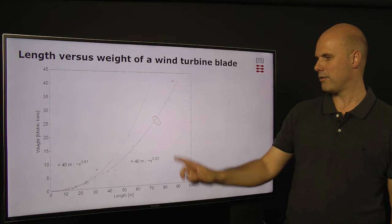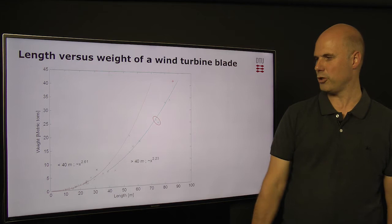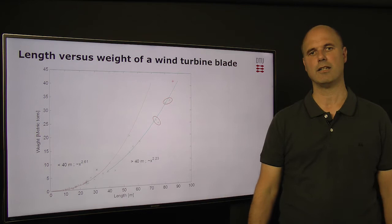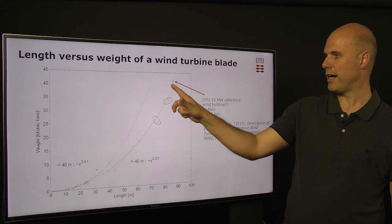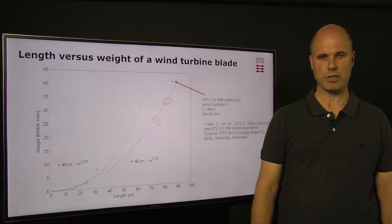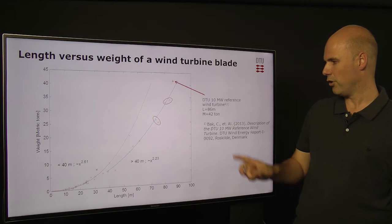If you zoom in on the longest blades, then we have two cases here: one made of pure glass epoxy or polyester — these are 70-plus meter long blades — and 80-plus meter long blades where the blade also consists of some carbon fiber in a load-carrying laminate. The final point up here, which is an 86-meter long blade, is a virtual blade — it's not being produced — but is a reference blade which will be used in an example later in this lecture.